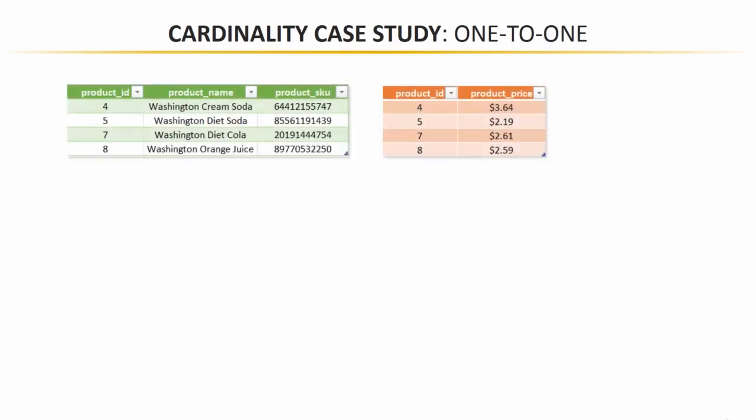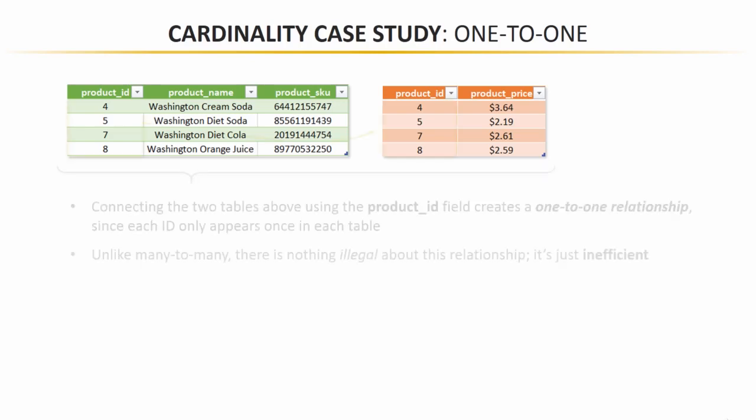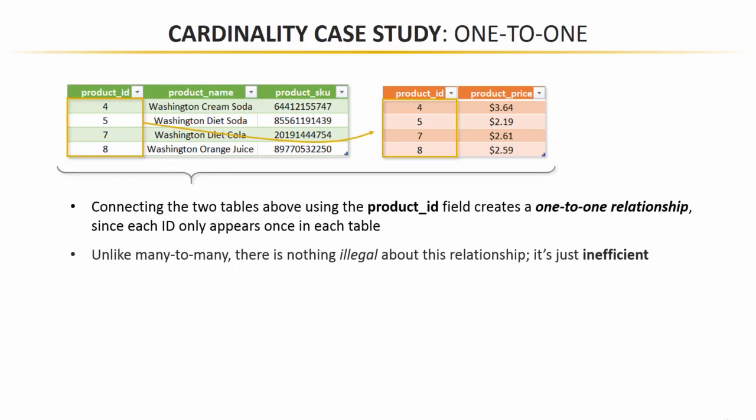Now let's move on to our second cardinality case study: one-to-one. Compared to many-to-many, this one's not nearly as bad — you can actually create one-to-one relationships, they're just a little bit inefficient. Consider these two tables: a product lookup on the left without those duplicate ID number four rows, and then almost like a smaller product lookup in orange on the right with product IDs and product prices. If we connect these two based on product ID, we're creating a one-to-one relationship since each ID only appears once in each table. Unlike many-to-many, there's nothing illegal about this relationship — it's just kind of an inefficient way to do things.